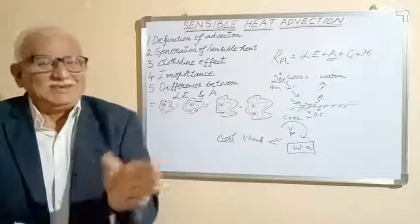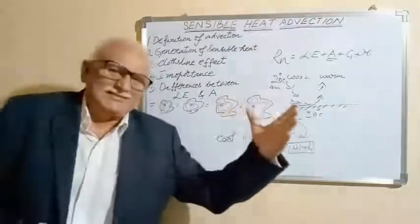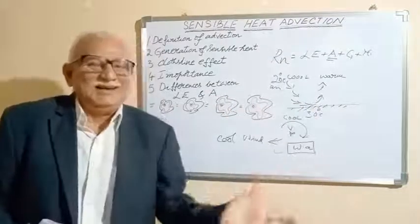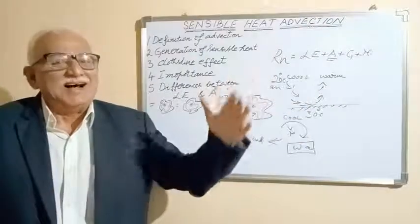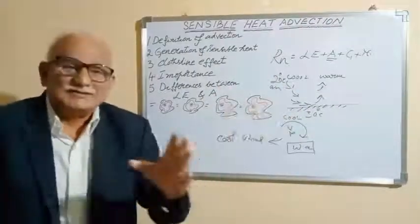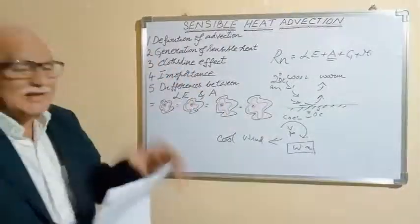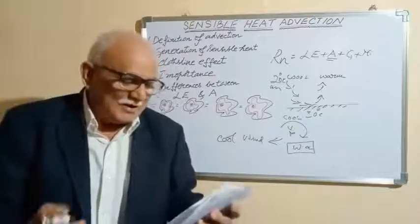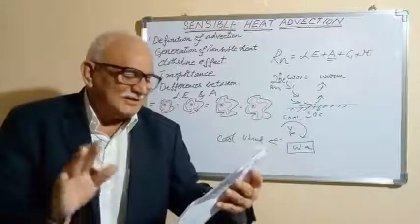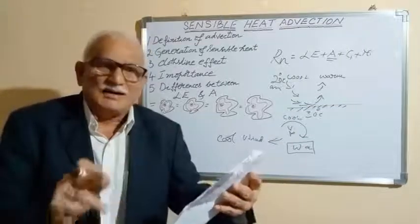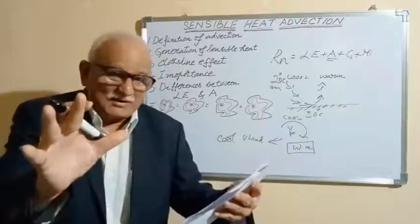If you stand on the leeward side of a paddy field which is irrigated, and one of your friends stands on the windward side — if you take the temperature on the windward side and it is 30, on the leeward side it would be 20. This is because of the clothesline effect. When air is horizontally transferred from areas where sensible heat has been generated through crops, a clothesline effect exists in that particular area.